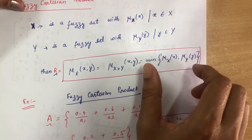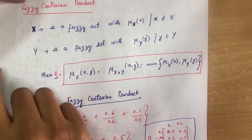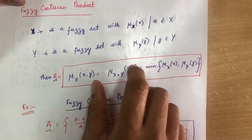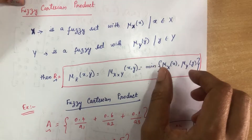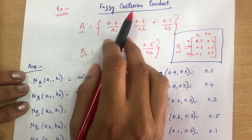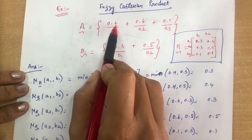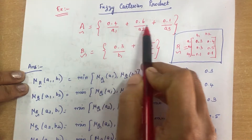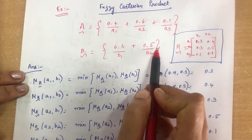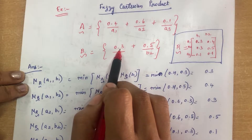When we want to perform a Cartesian product between two fuzzy sets, we just take the membership values and find the minimum among them. In classical Cartesian product we do the product between two classical sets, but here we only need to find the minimum among the two membership values. Let me explain the fuzzy Cartesian product with an example. Consider fuzzy set A = 0.4/a1 + 0.6/a2 + 0.1/a3 and fuzzy set B = 0.3/b1 + 0.5/b2. We need to find the fuzzy Cartesian product R = A × B.